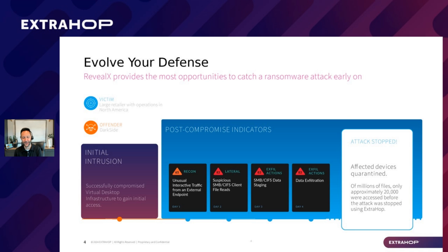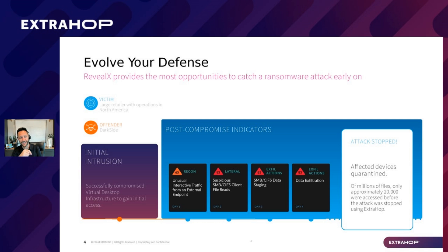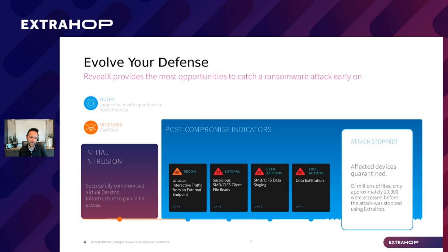This slide takes that last one a bit further. We still have the initial intrusion, but in the middle where it says post-compromise, there's a small screenshot from our platform. This is what we call our detection timeline. When we detect something, we create a big detection and outline all of the related detections on a timeline. So you can see — hey, we detected this, and here are all the related detections — whether it was when they first got initial access, suspicious SMB or CIFS client file reads, data staging, then data exfiltration. From that single detection, we tie all of the related events together and allow you to understand what the whole campaign consisted of. It isn't just a series of disconnected events — we tie it all together to give you a full timeline of the entire attack.